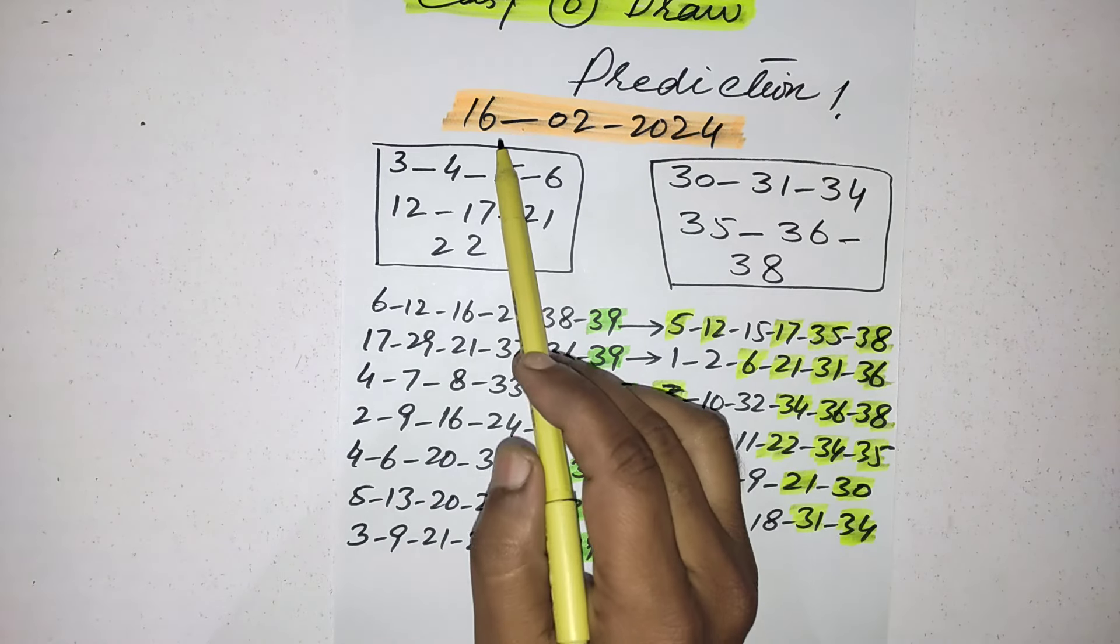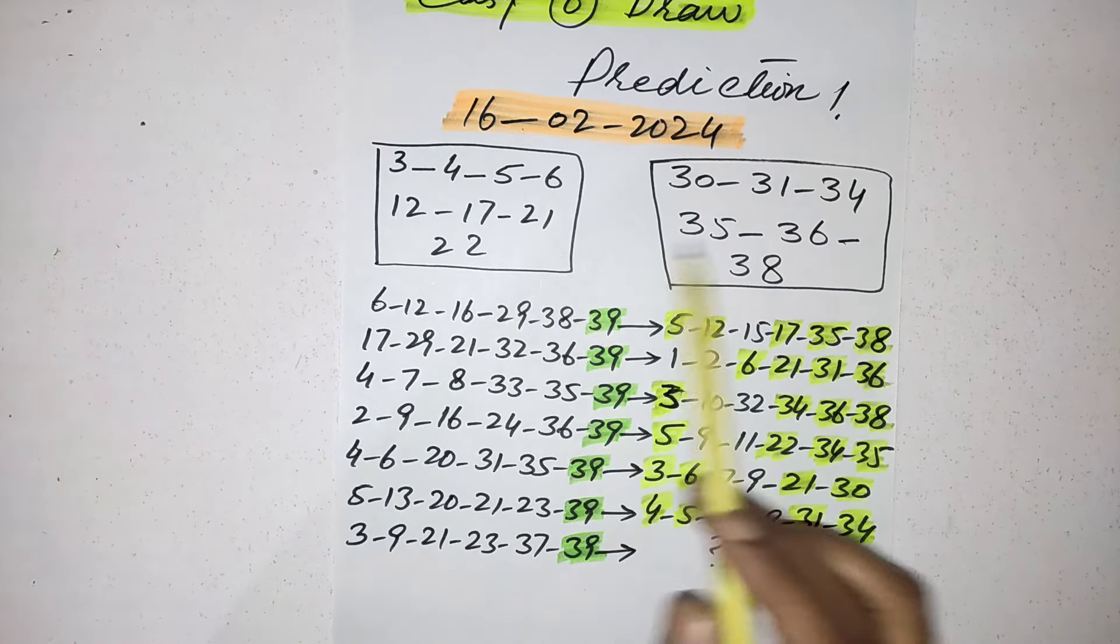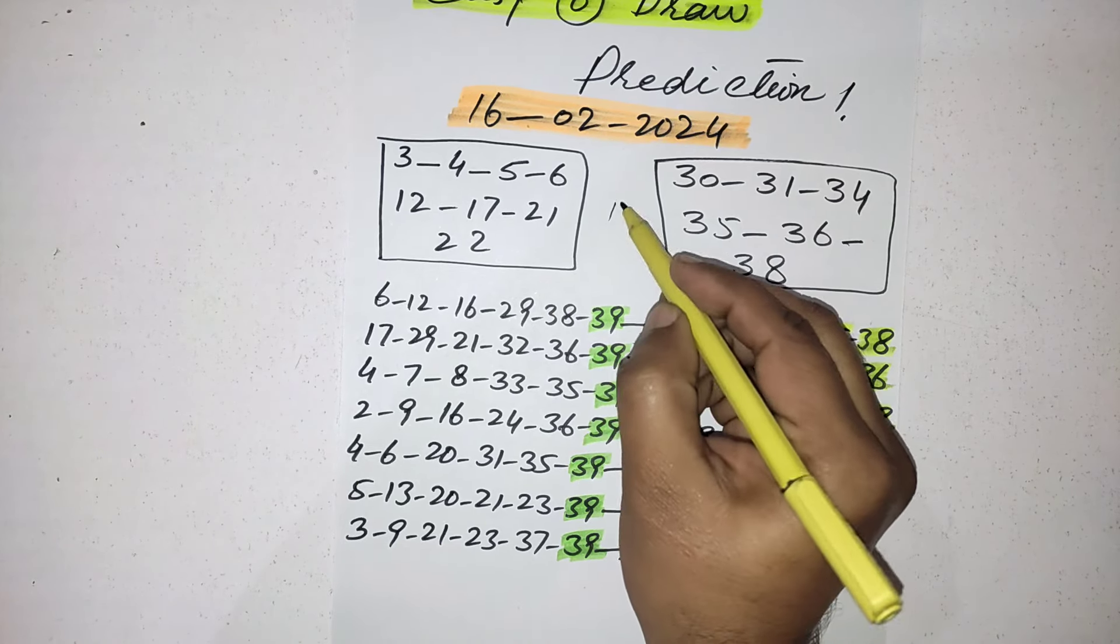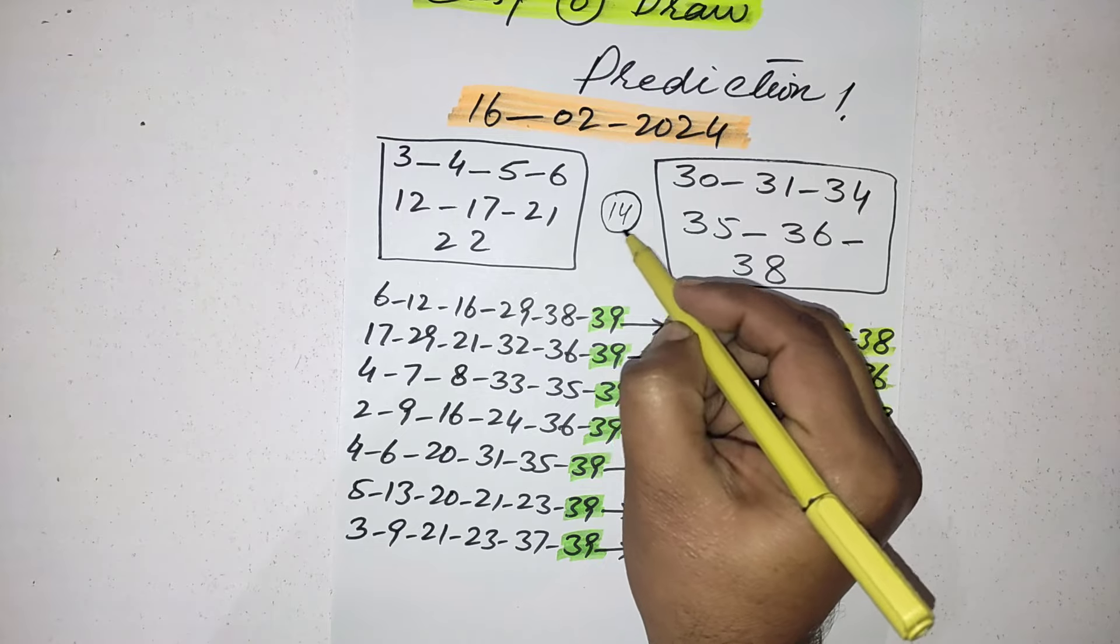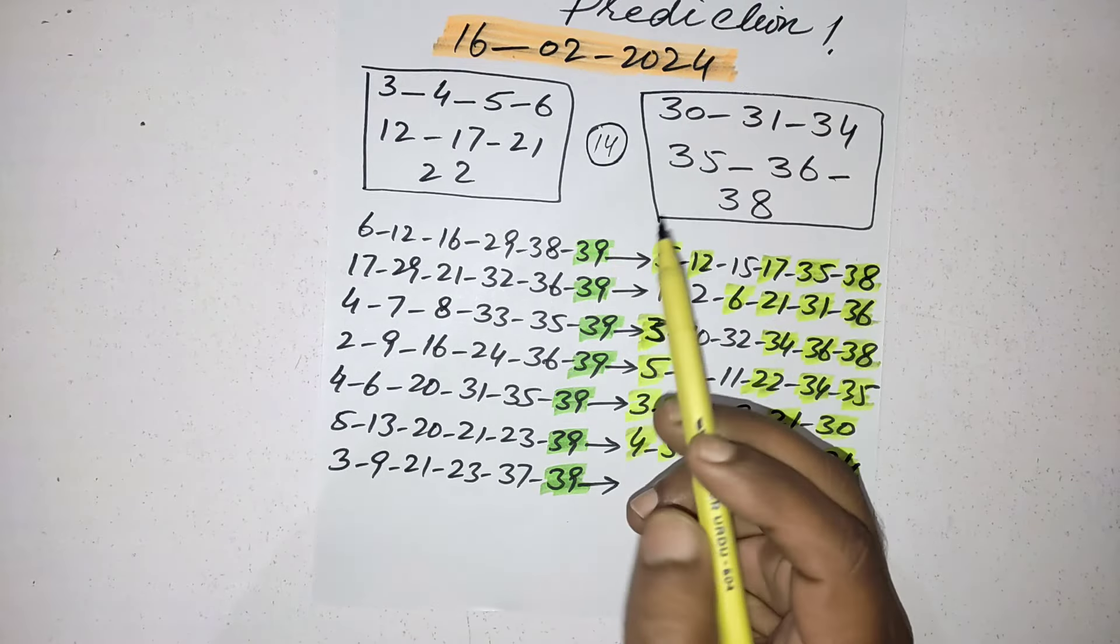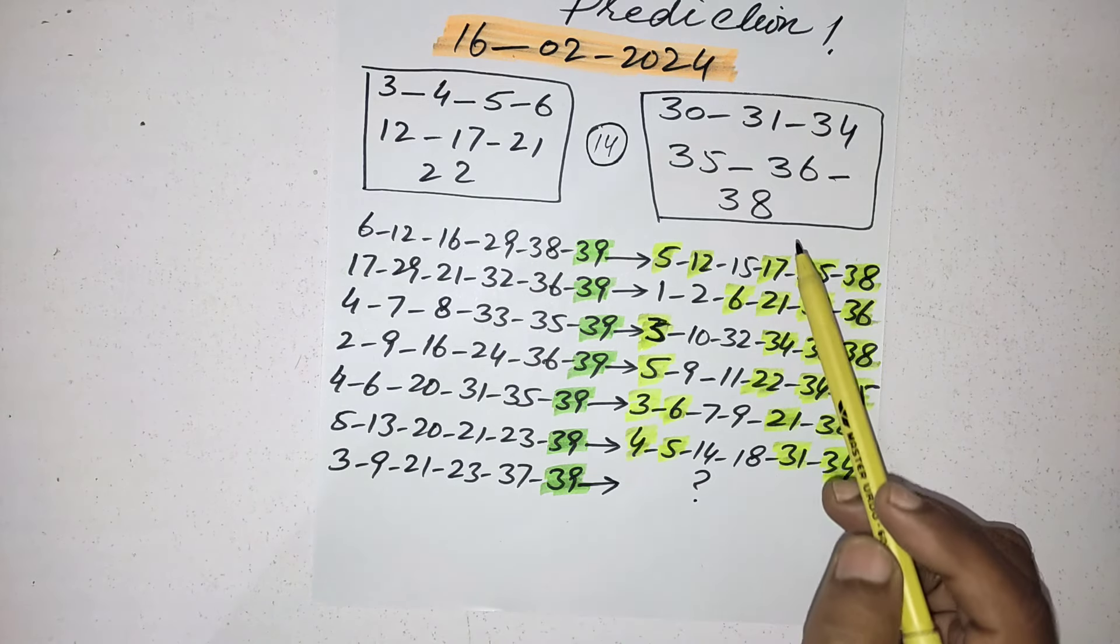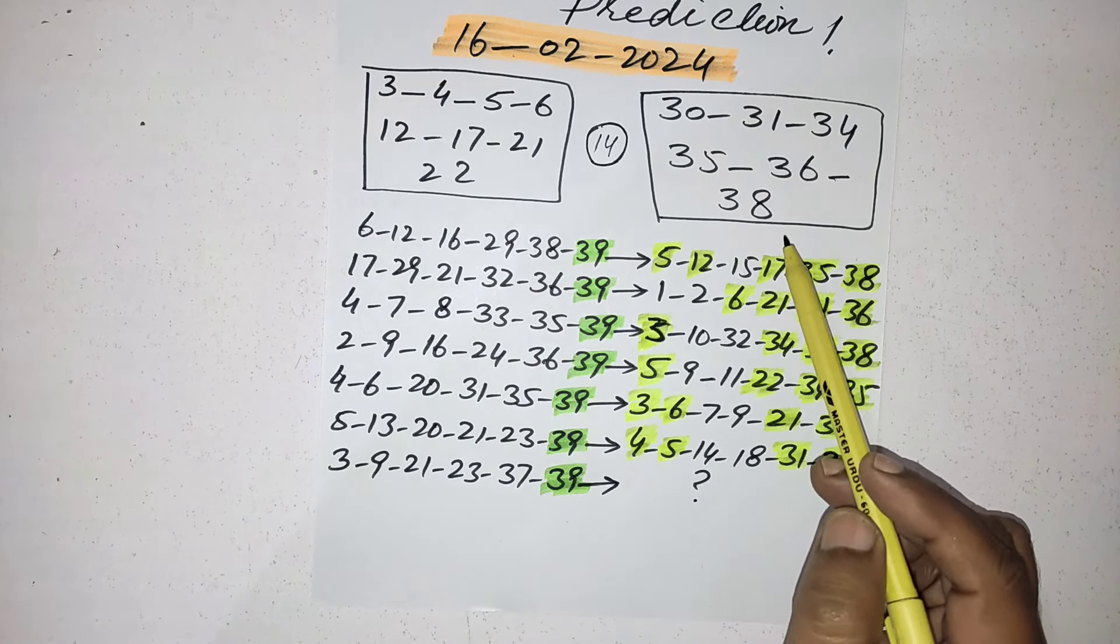These are the most powerful numbers. These are total 14 numbers. When you select your numbers, you should must select two or three numbers from this box and two or three numbers from this box.